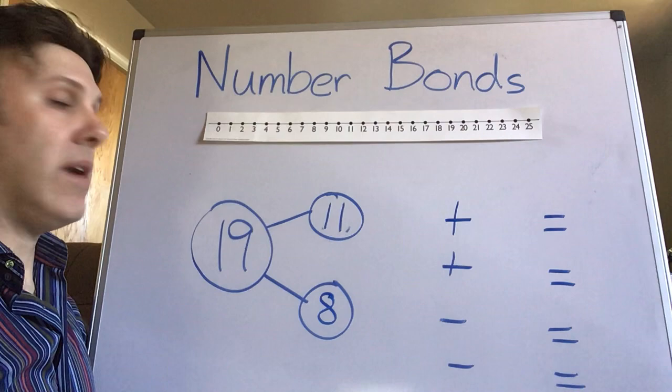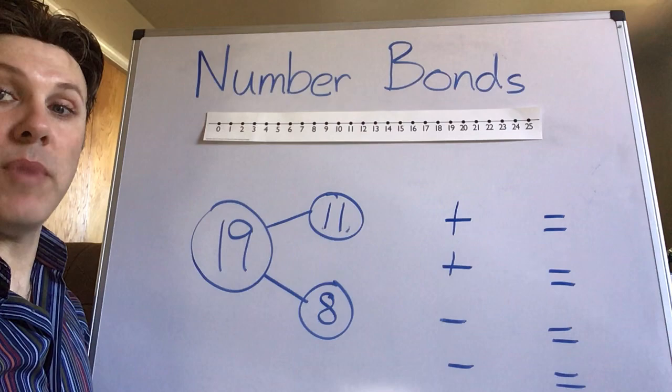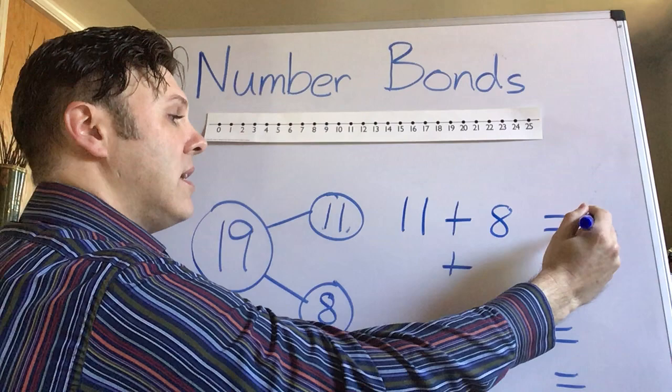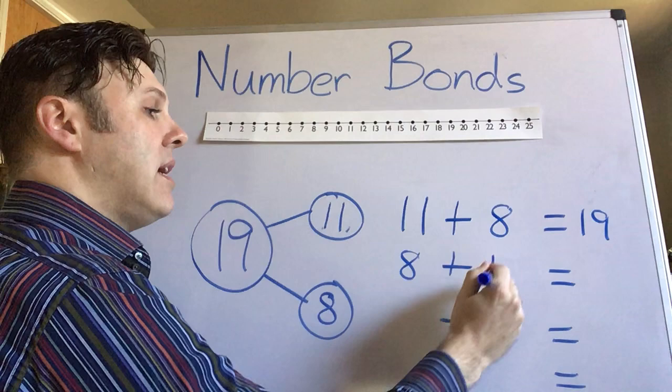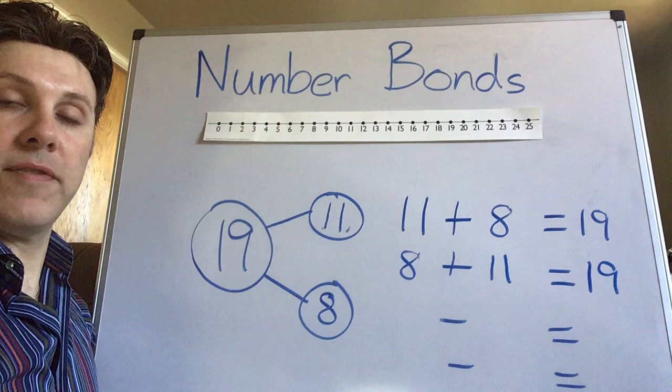All right, what do we do first? That's right. We take the two smaller numbers. Eleven plus eight equals nineteen. Eight plus eleven equals nineteen.